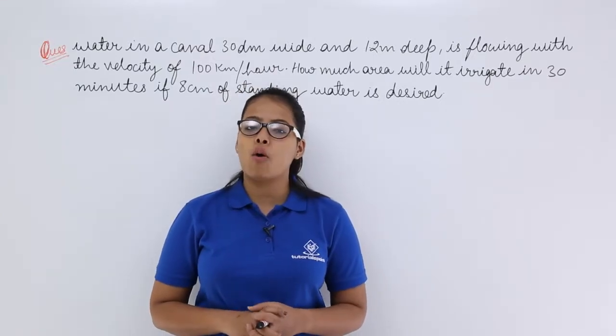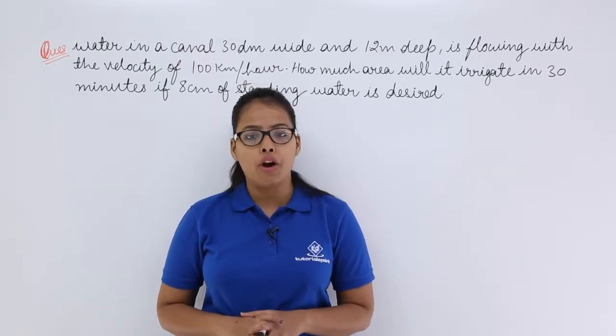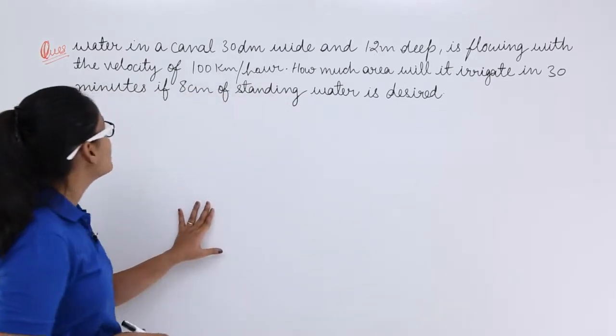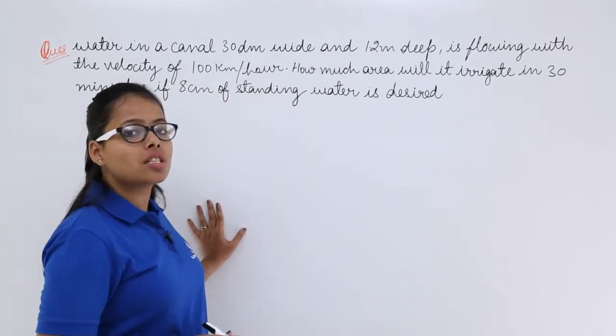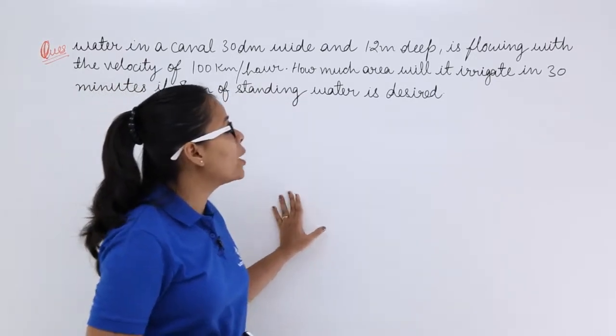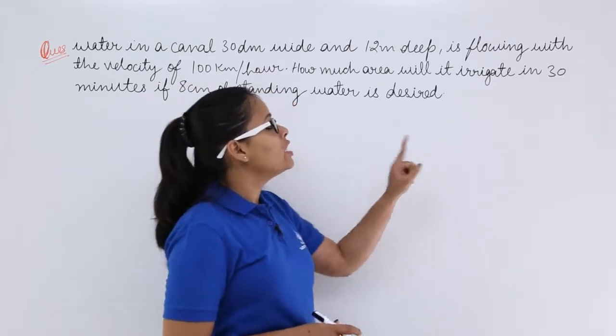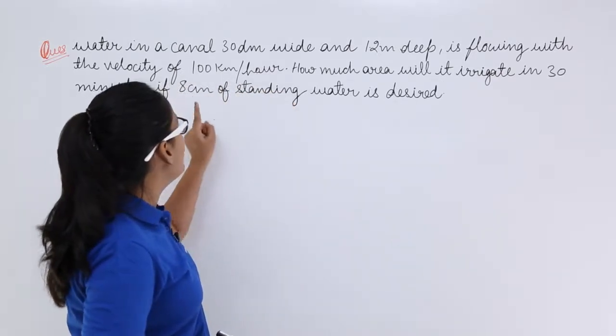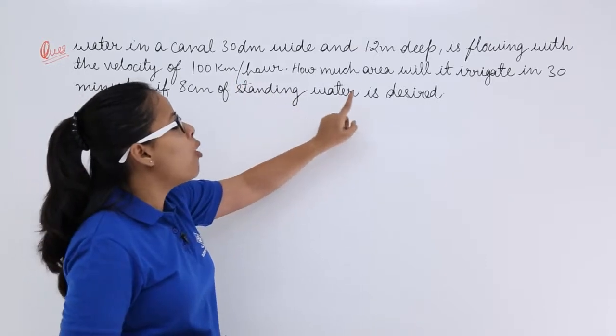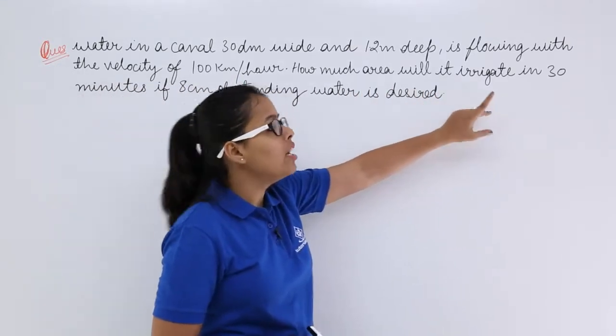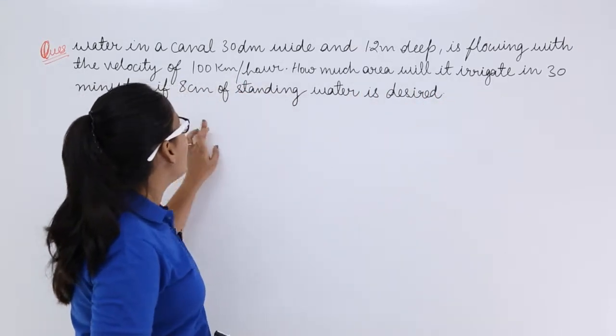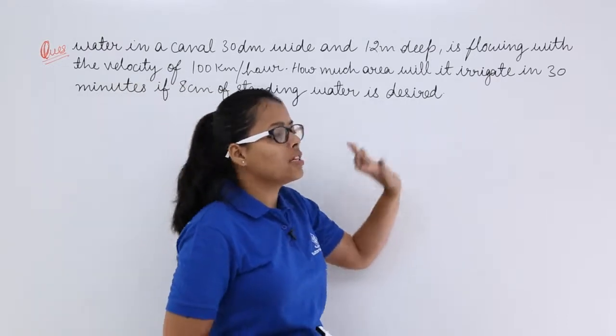Hello guys, let's discuss this problem on volume of cuboids. Here this problem says water in a canal which is 30 decimeter wide and 1.2 meter deep is flowing with the velocity of 100 km per hour.